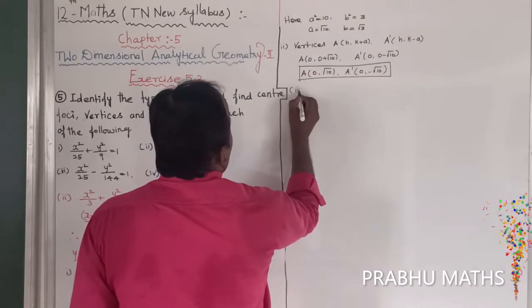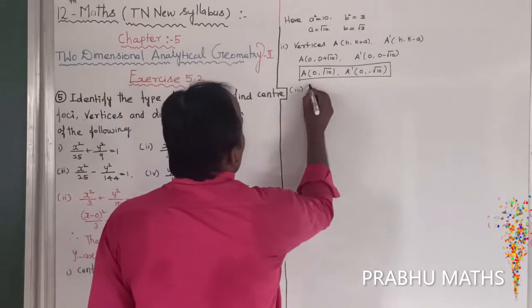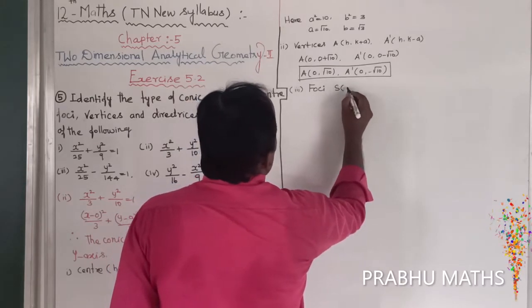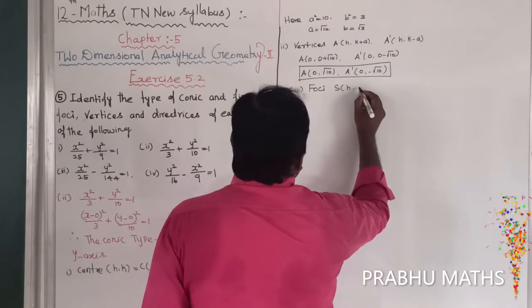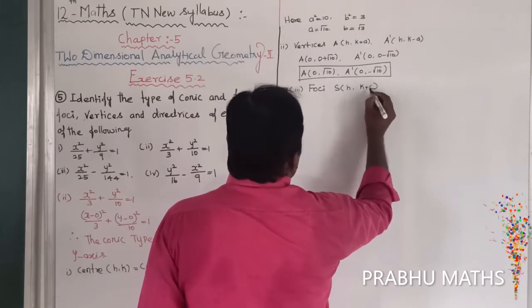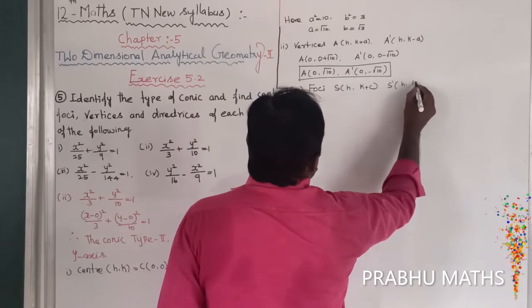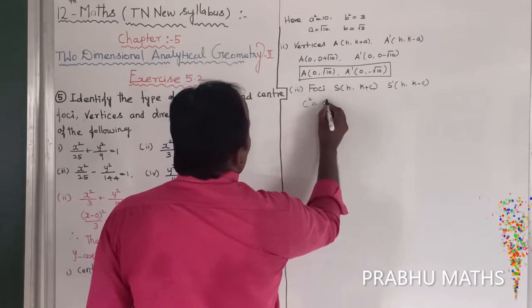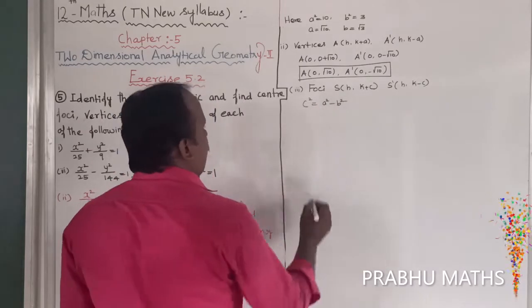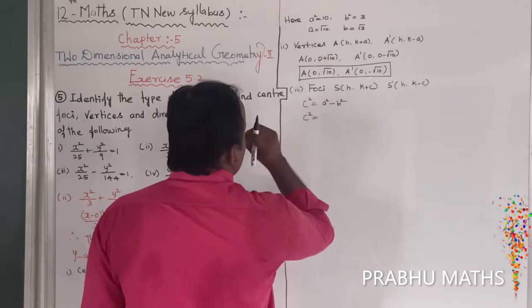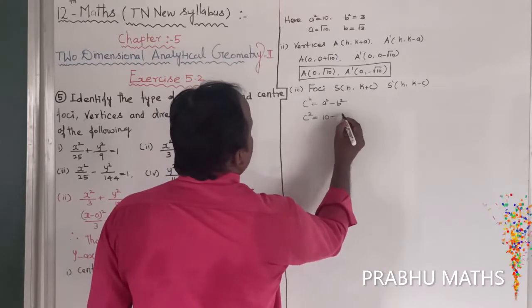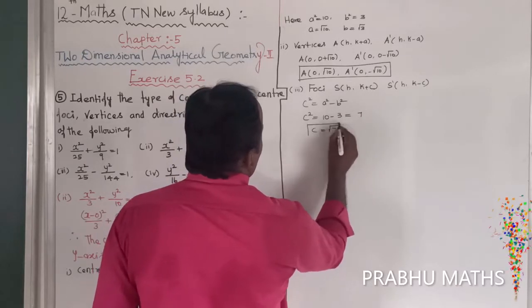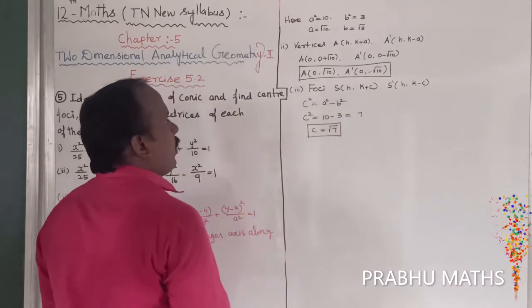Next, find the foci. Using c² = a² - b²: c² = 10 - 3 = 7, therefore c = √7.